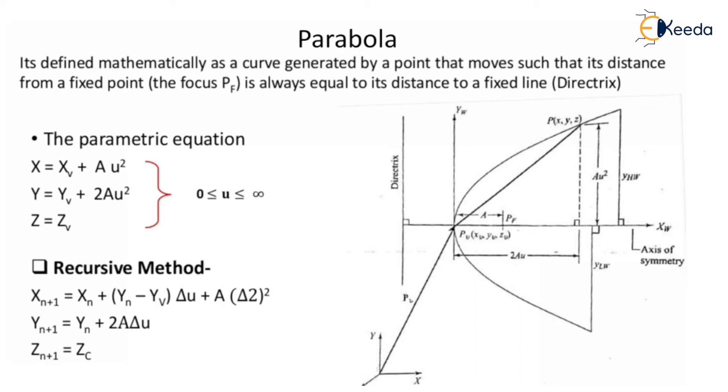Similarly, in the recursive method it will be the same as ellipse. X(n+1) = Xn + (Yn - Yv)Δu + A(Δu)². Make a correction: it's Δu, not Δ2. A into Δu squared. Y(n+1) = Yn + 2AΔu, and Z(n+1) = Zc.